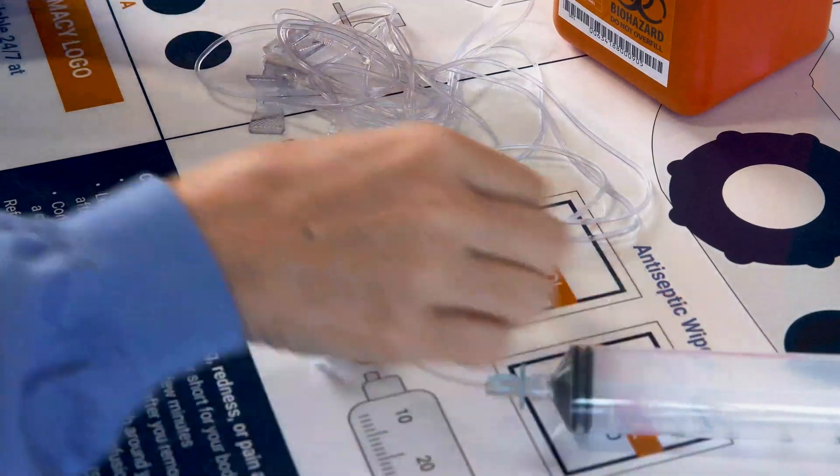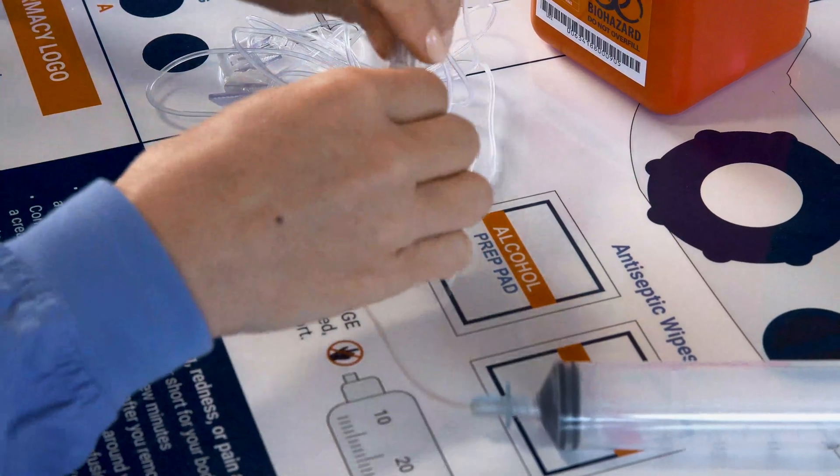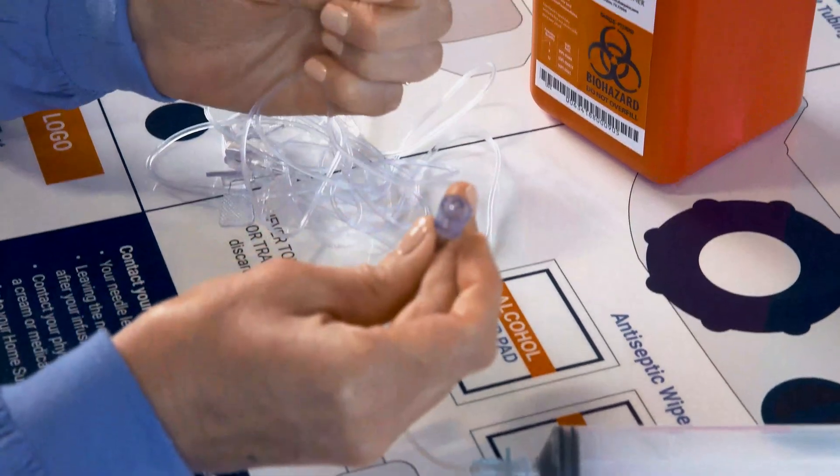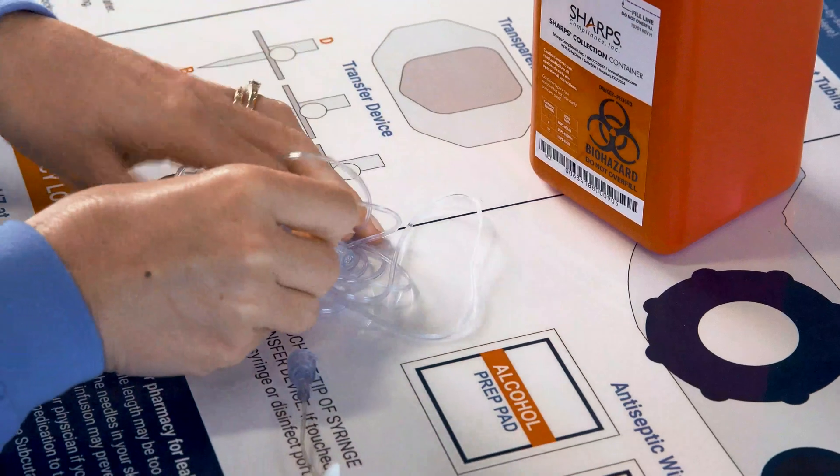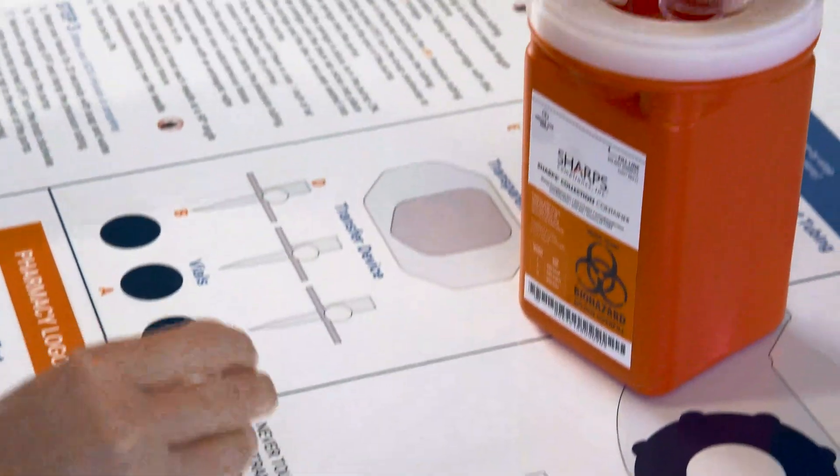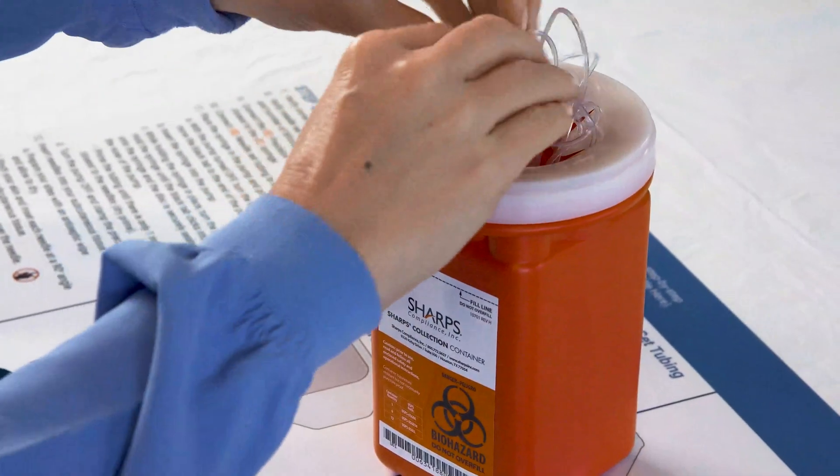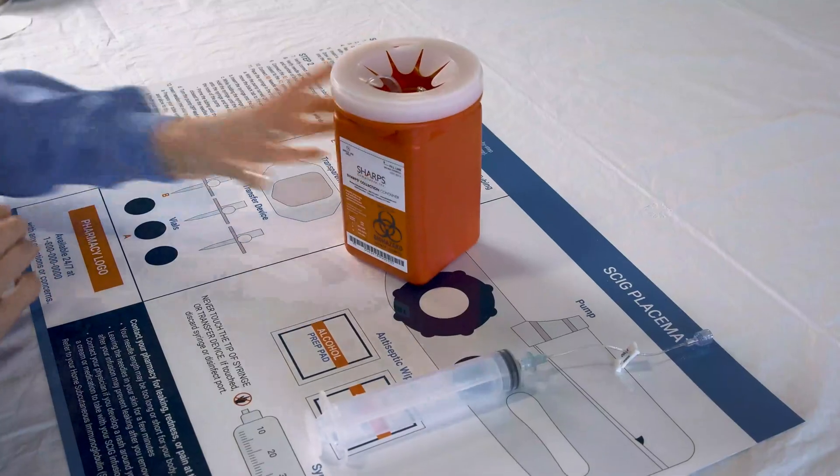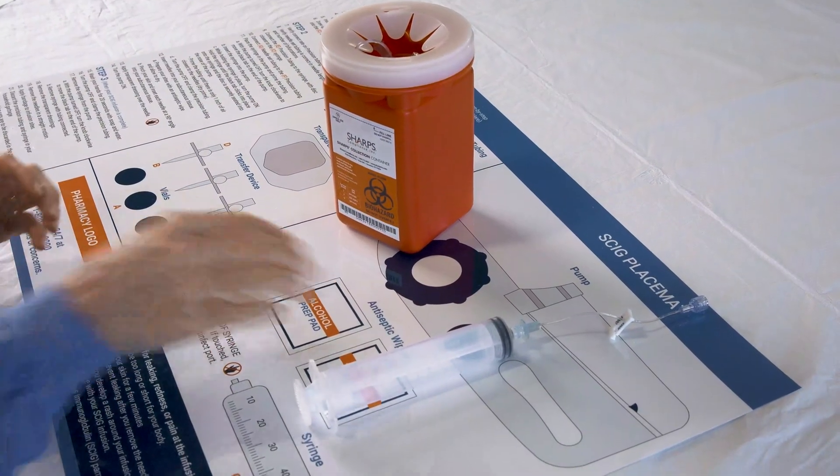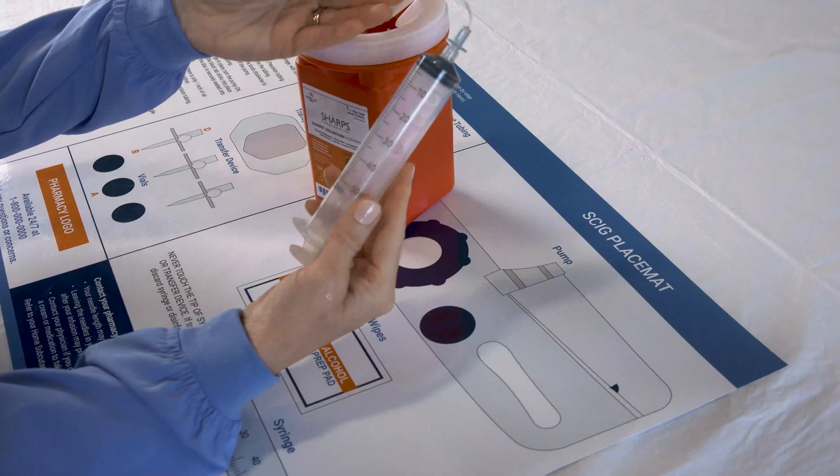You will need to remove the needle set from the other supplies by unscrewing it from the precision tubing, so the needles can be disposed of in the sharps container provided by your pharmacy. The precision tubing and syringe can be double-bagged and disposed of with your household garbage.